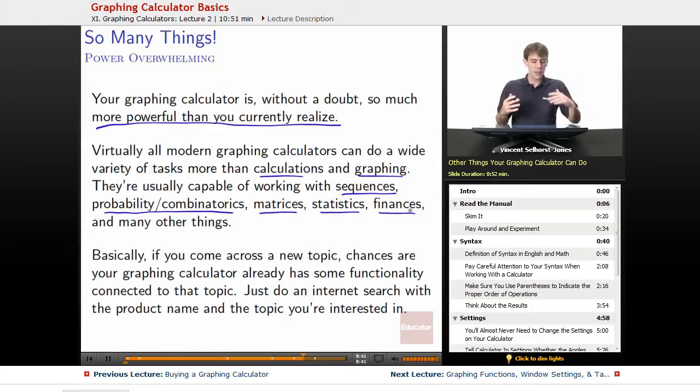So basically, if you come across a new topic, chances are your graphing calculator already has some functionality that's connected to this new topic you're learning about. Just do an internet search with the product name you've got and the topic you're interested in. Just search your calculator and whatever the name of the thing you're interested in is, whether it's matrices or probability, and you'll probably be able to find very quickly a guide for doing that specific thing with your calculator.